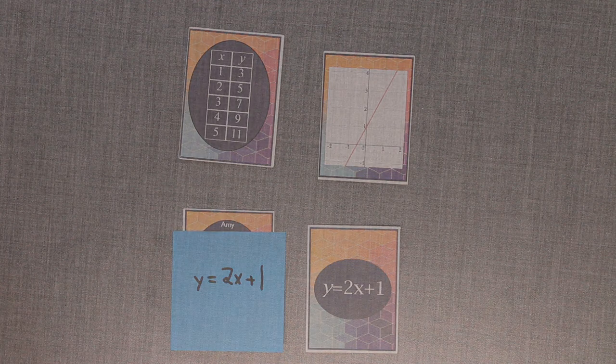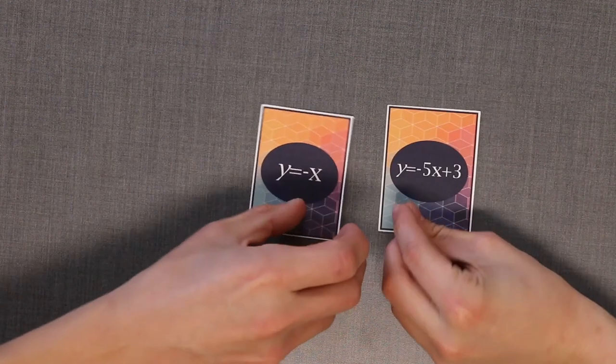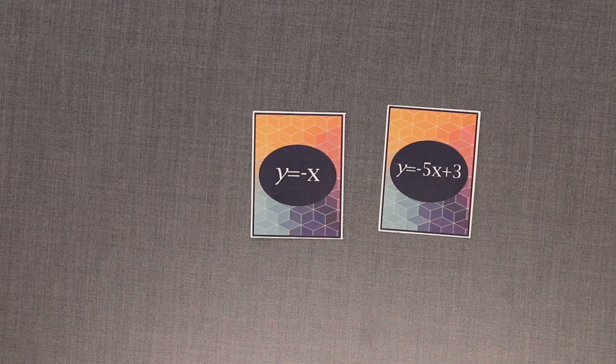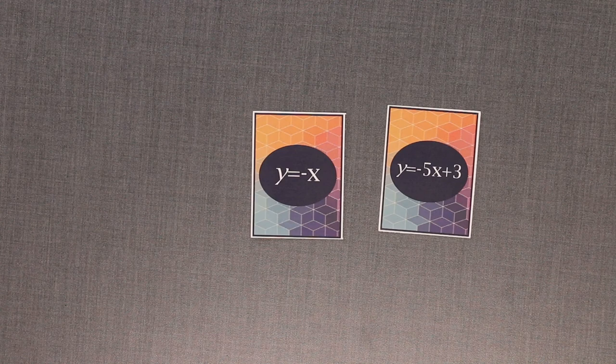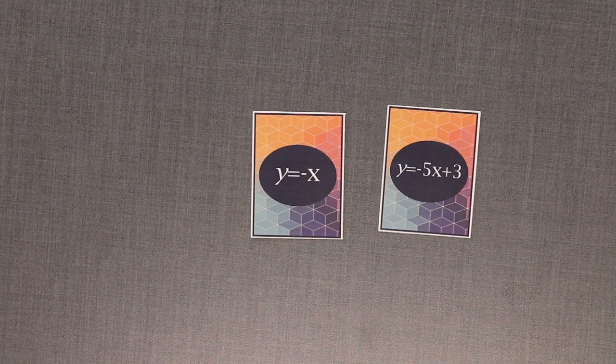Now we can begin gameplay. This game is similar to the classic game War. On the count of 3, all players flip the top card on their deck face up in the center. Each player will determine the y-intercept, x-intercept, slope, or absolute values of these values for all linear functions in play.